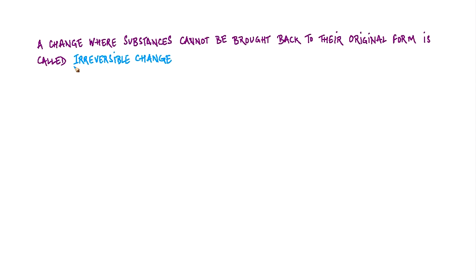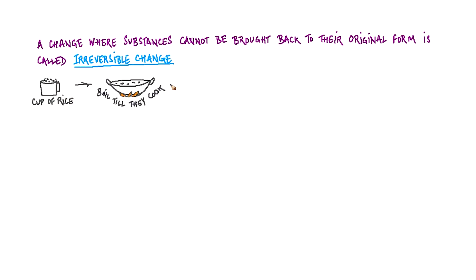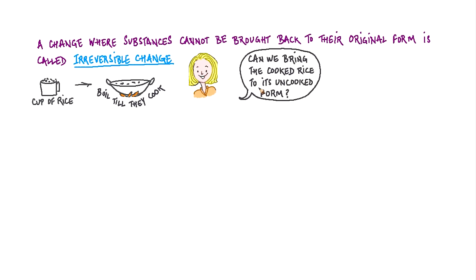A change where substances cannot be brought back to their original form is called an irreversible change. Growth of living things is an irreversible change. Let's see if we can think of some more changes that cannot be reversed. Take a cup of rice and boil it till it cooks. Can we bring the cooked rice back to its uncooked form? No, we can't. This is an irreversible change.